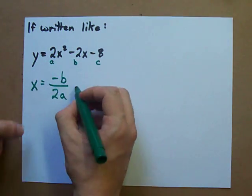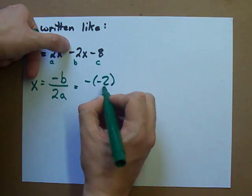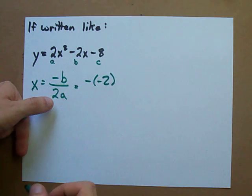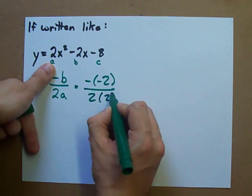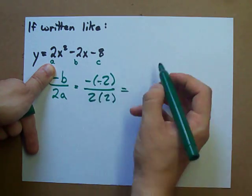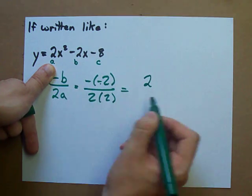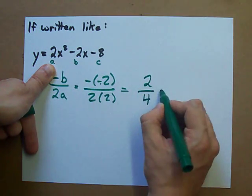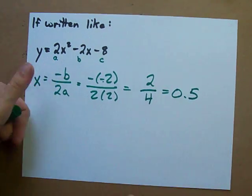And the x-coordinate of the vertex is negative, well, b is negative 2, over 2 times a. a was 2. What I get here is negative, negative 2. That's two negatives that cancel each other out. That gives 2. And then I get 4 on the bottom. This turns out to be 0.5, or 1 half, if you prefer.